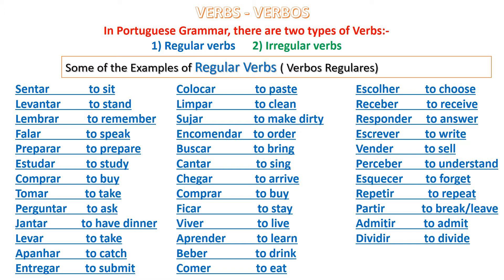Now, let's study some of the examples of regular verbs with their meaning, which will help you to do normal conversation. I am going to pronounce some of the regular verbs with their meaning in English. Please, you can just repeat with me.